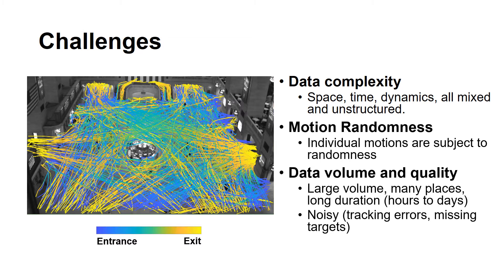Last but not least, crowd data is normally huge in volume and varies in quality. Data can be as long as hours to days. Tracking errors and missing targets happen frequently.